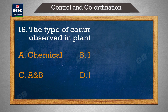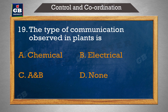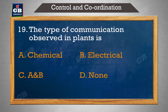The type of communication observed in plants is — plants mein manaya jane wali communication ka prakar hai: A) chemical, B) electrical, C) both A and B, D) none.